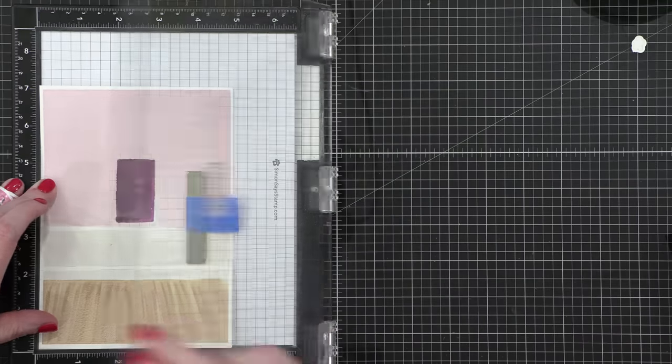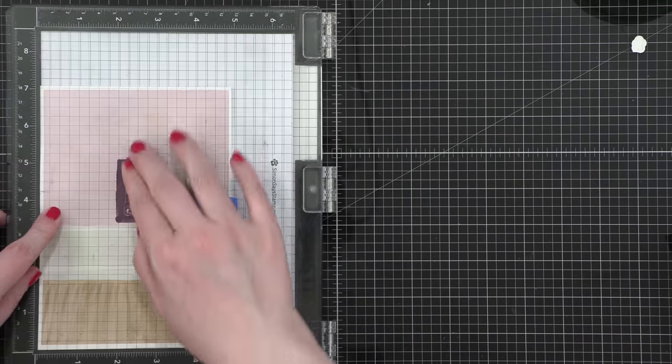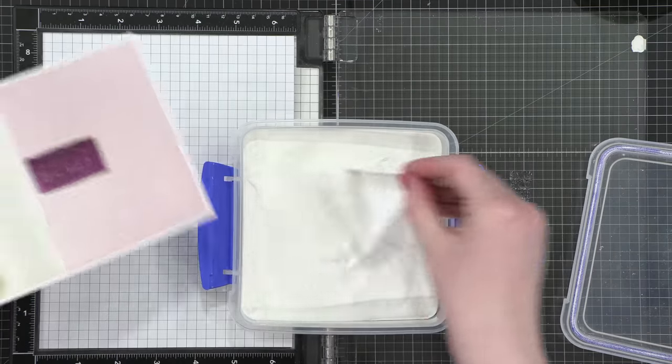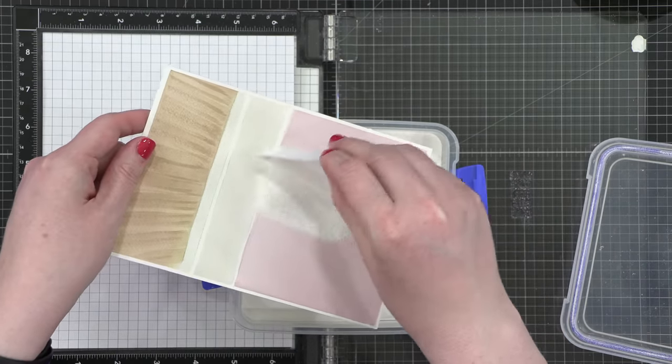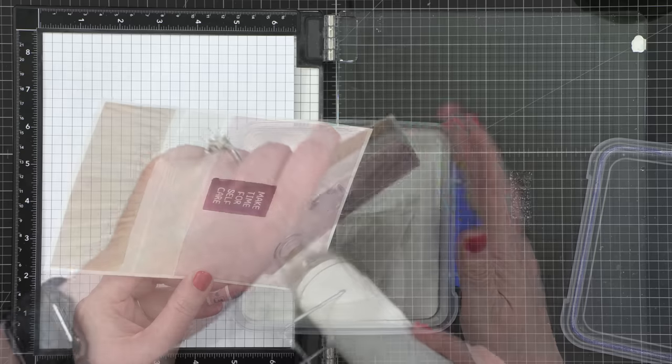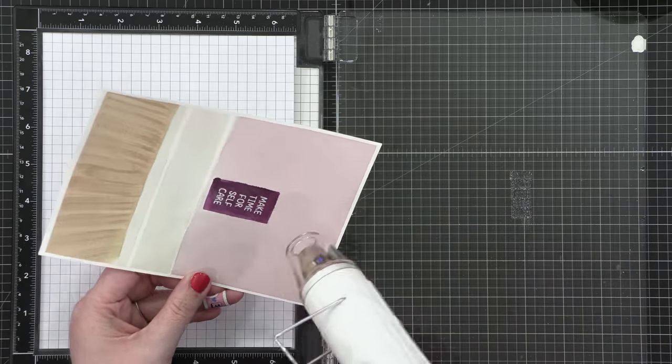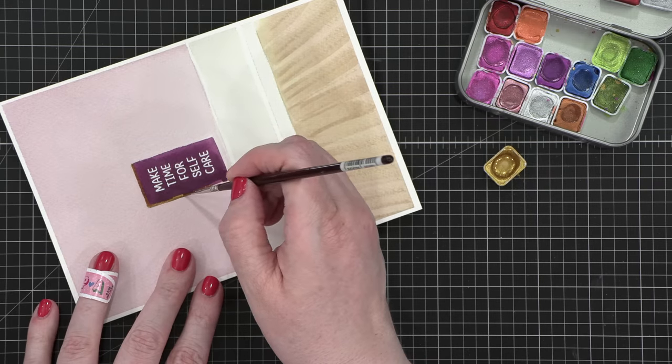I'm stamping my greeting once again that I had already had in my MISTI. So it's going to go right over that area where it was before. And I've stamped that in Versamark and then coating it in some heat embossing powder. This is Alabaster embossing powder from Brutus Monroe. So now I have a nice bright white greeting.